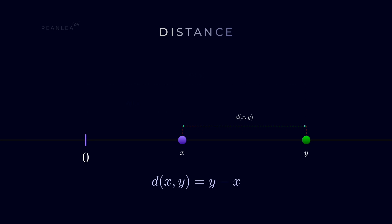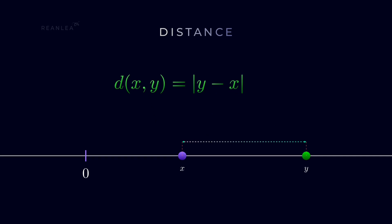And since we can alternate the position between x and y to get the same value of the distance between them, therefore we can conclude the distance will be mod of x minus y or mod of y minus x. And here in this case, whatever the result is, it's always greater than 0.